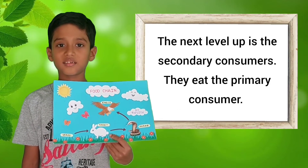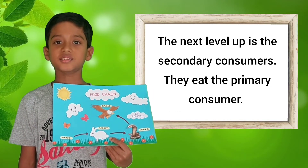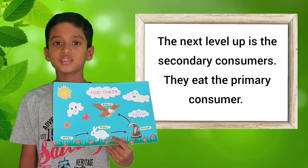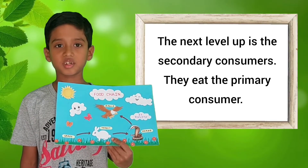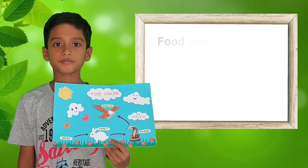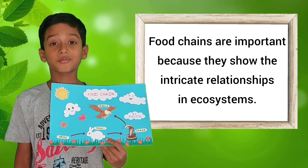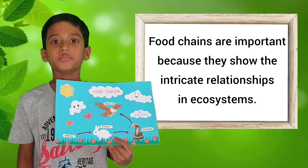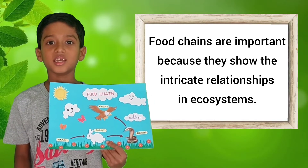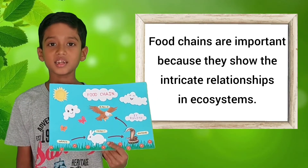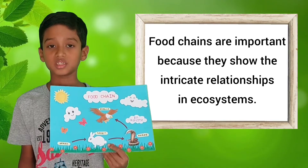The next level up is the secondary consumer. They eat the primary consumer. Food chains are important because they show the intricate relationships in an ecosystem.